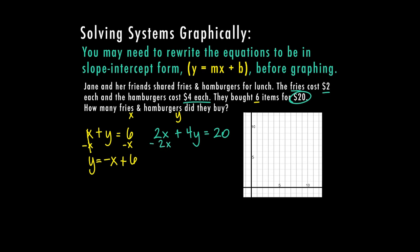For the second equation, 2x plus 4y equals 20: I subtract 2x from both sides to get 4y equals negative 2x plus 20. Then I divide everything by 4. The coefficient on y becomes 1, negative 2 over 4 reduces to negative one-half, and 20 divided by 4 is 5. So the equation becomes y equals negative one-half x plus 5. Now I have both equations in slope-intercept form.